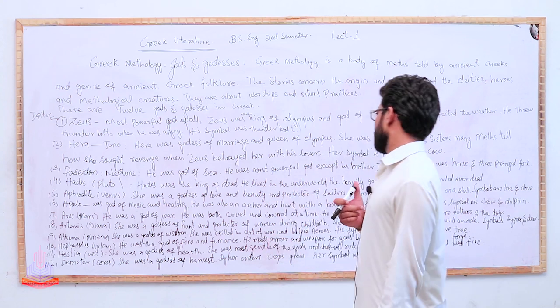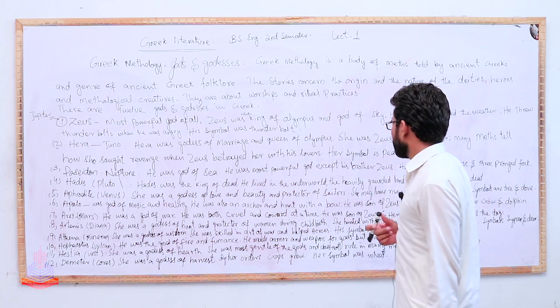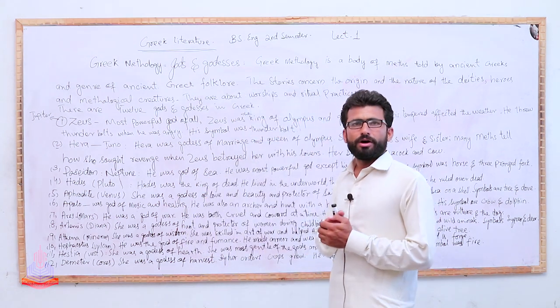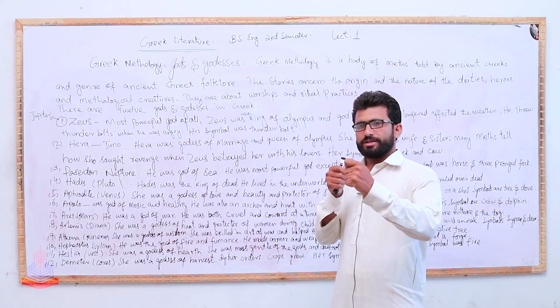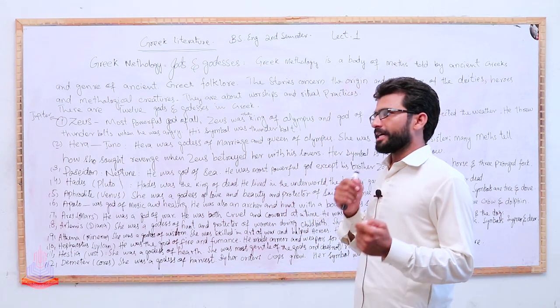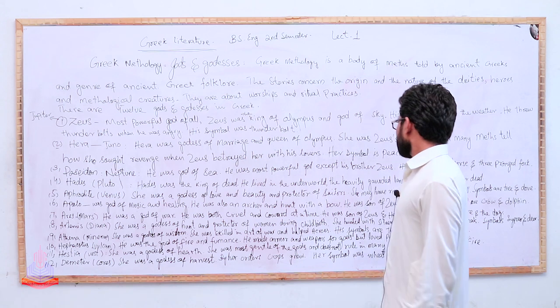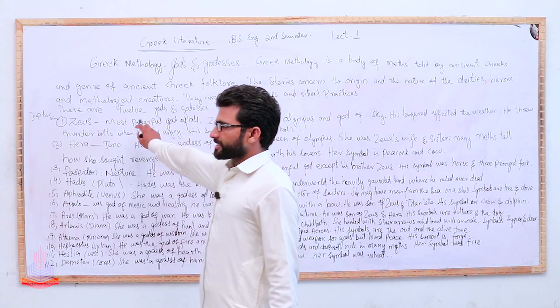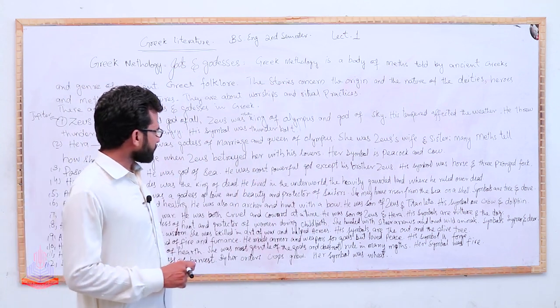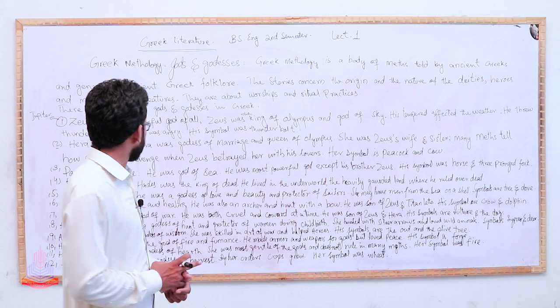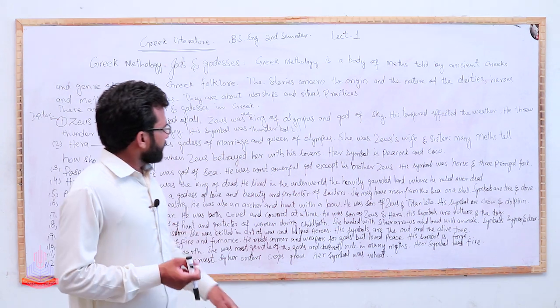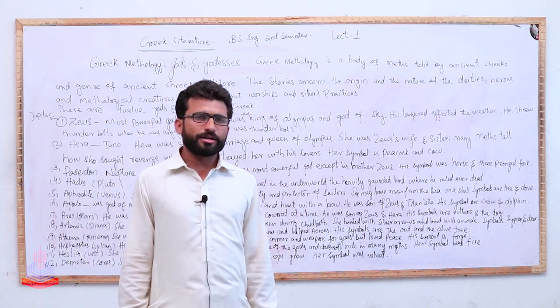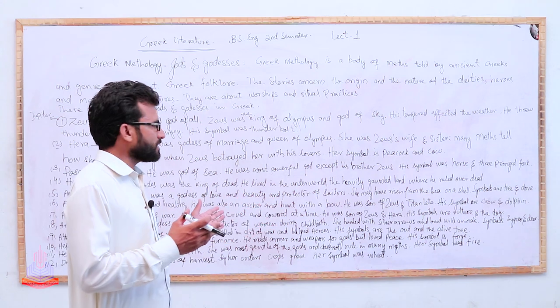He was an archer also and hunted with a bow. He hunted with bow and arrows. He was son of Zeus and Titan Leto. Zeus and Titan Leto's son is Apollo. His symbols are crow and the dolphin.